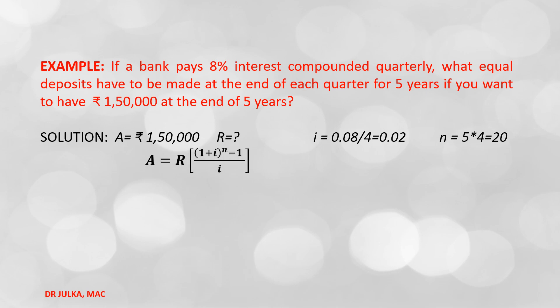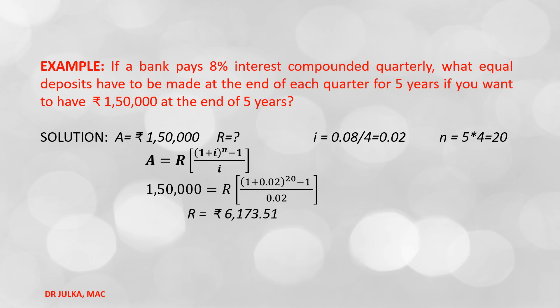In ordinary annuity, future value = R × [(1 + i)^n − 1] / i. Putting A = 1,50,000, i = 0.02, and n = 20, after calculation we get the value R = Rs. 6,173.51.